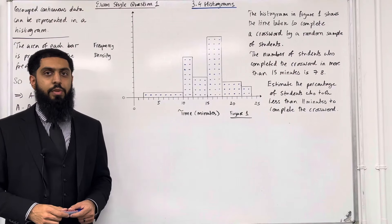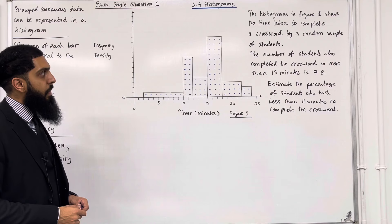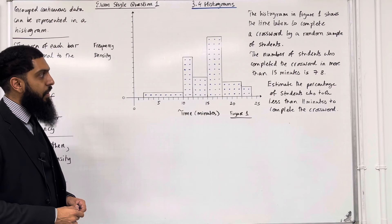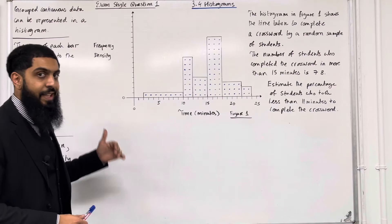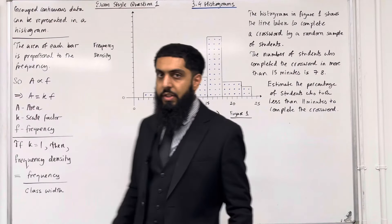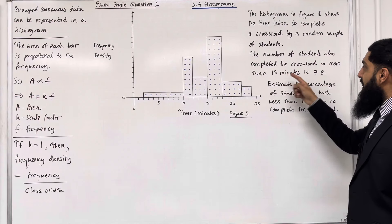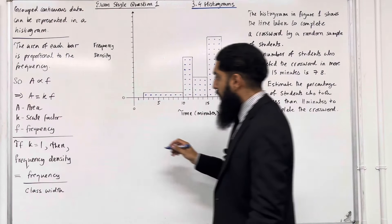Here is exam-style question 1. The histogram in figure 1 shows the time taken to complete a crossword by a random sample of students. The number of students who completed the crossword in more than 15 minutes is 78. Estimate the percentage of students who took less than 11 minutes to complete the crossword. The single blue dots represent single small squares. We're going to use the statement that the frequency for more than 15 minutes is 78.